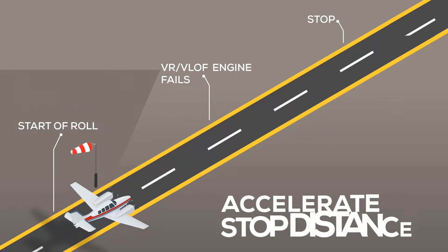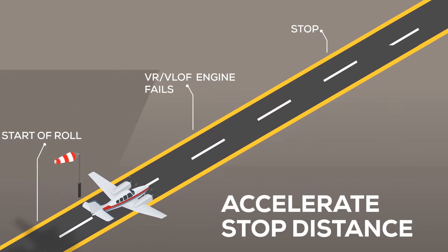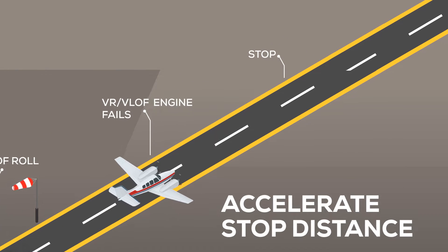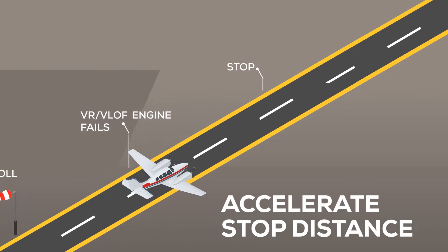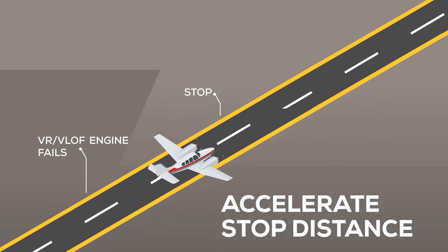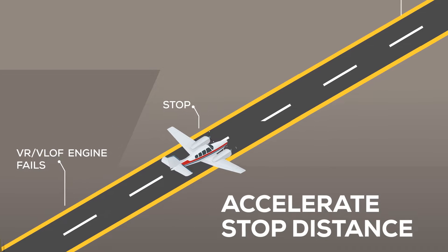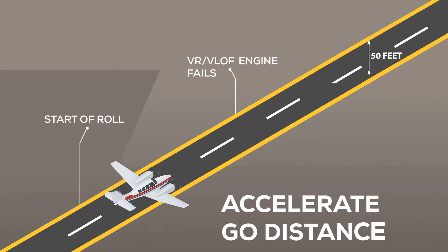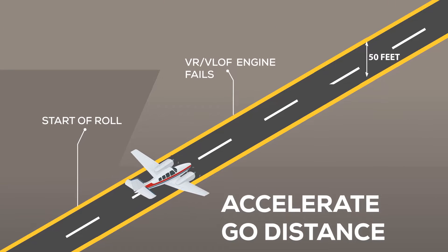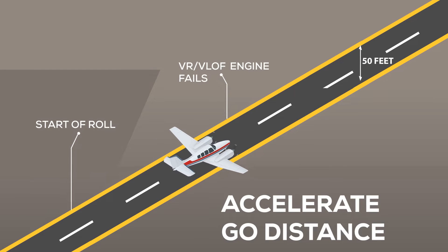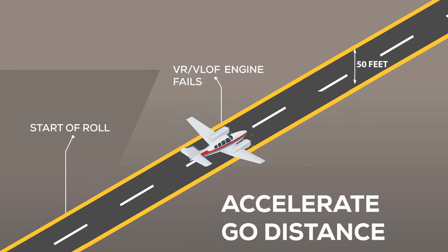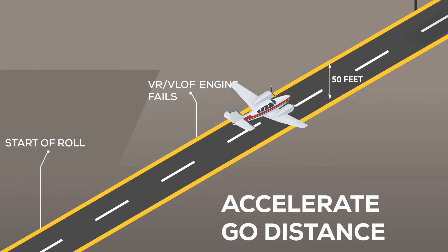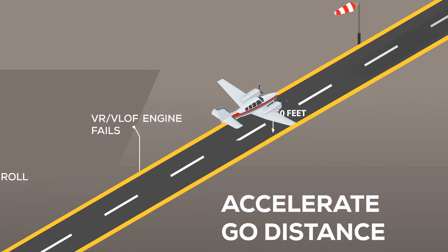Two important performance and limitation figures from the charts are the accelerate stop distance and the accelerate go distance. Accelerate stop distance is the runway length required to accelerate to a specified speed, abort the takeoff, and bring the airplane to a complete stop. Accelerate go distance is the horizontal distance required to continue the takeoff and climb to 50 feet, assuming an engine failure at a specified speed.